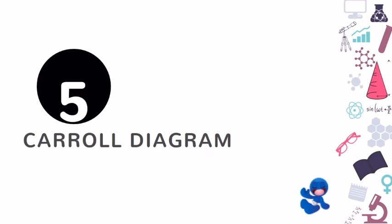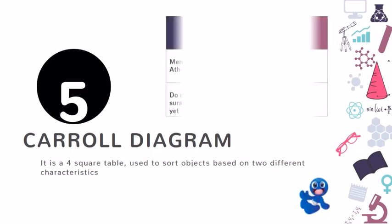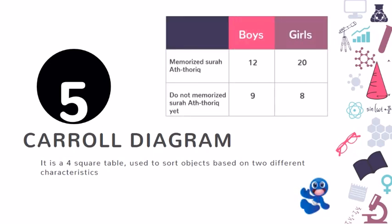Let's have a look on Carroll diagram. What is Carroll diagram? It is a four square table used to sort objects based on two different characteristics. Basically, it is a table. For example, this is a table and the characteristics are do not memorize and also memorize, and the next category here is boys and also girls, based on two different characteristics and the characteristics is opposite to each other.